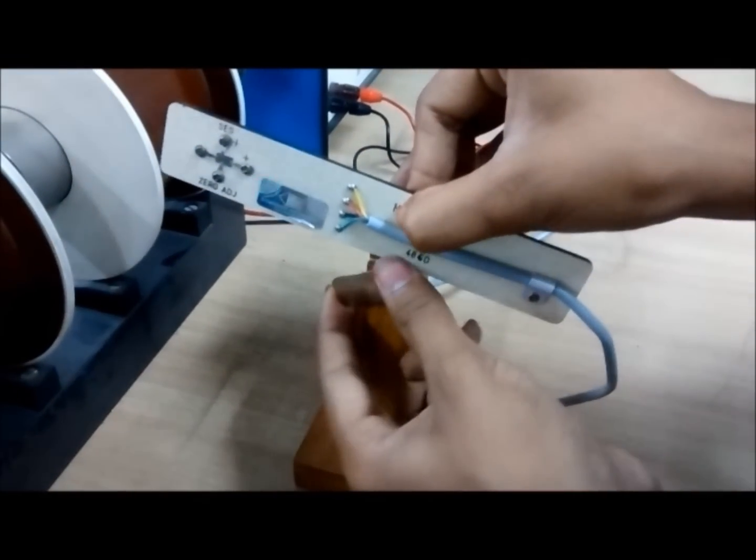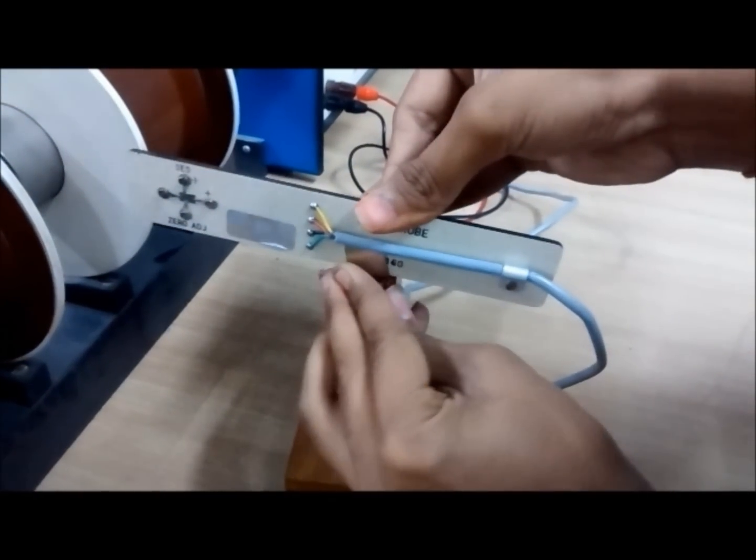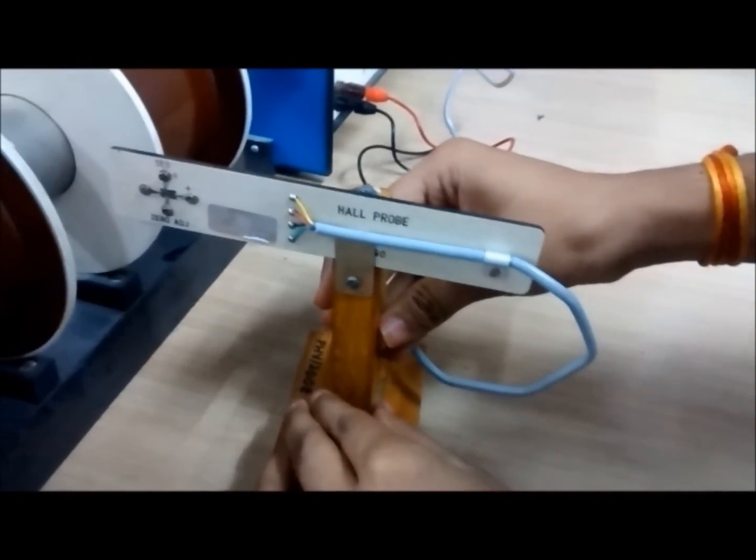Now insert the extrinsic semiconductor device between the poles of the electromagnet.